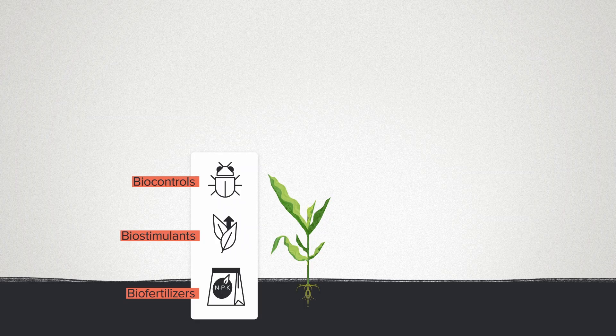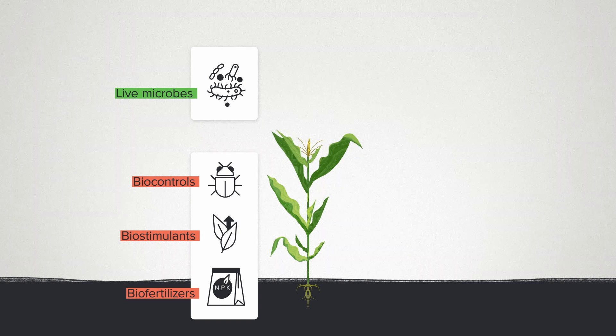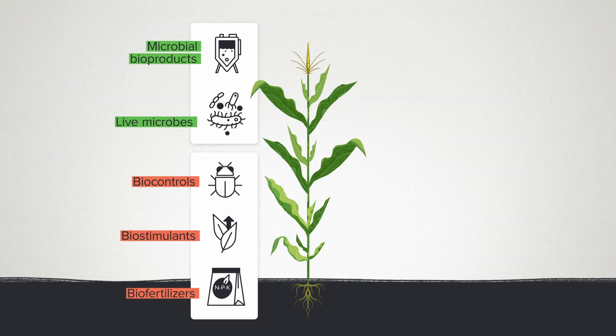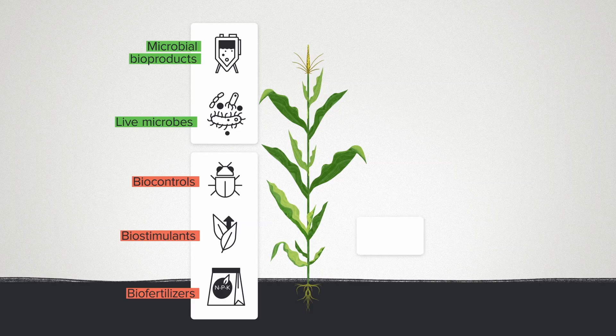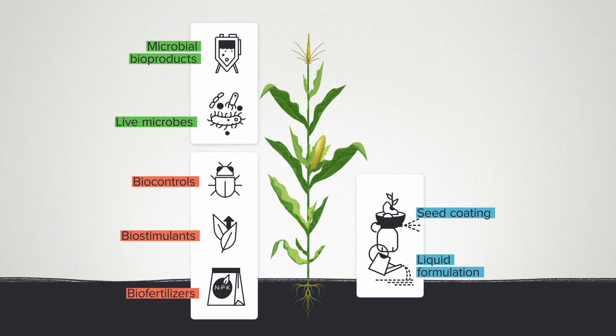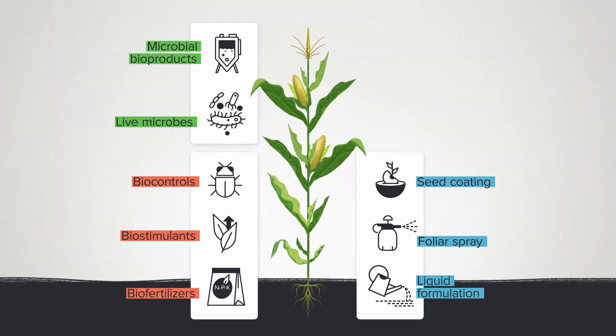We can also organize ag-biologicals by format: live microbes that are metabolically active out in the field, or microbial bioproducts derived from fermentation and deployed like a chemical product would be. Or we can think about their formulation — everything it takes to get the active ingredient working out in the field. This could mean a seed coating, a liquid formulation for soil drenching, or a foliar spray that goes directly on the plant. From Ginkgo's perspective, these are all microbes that can be engineered, evolved, or selected — all within scope for the biology foundry we've built.